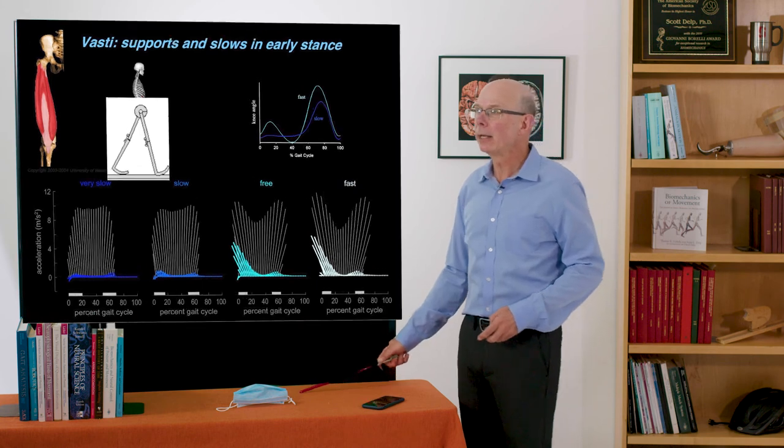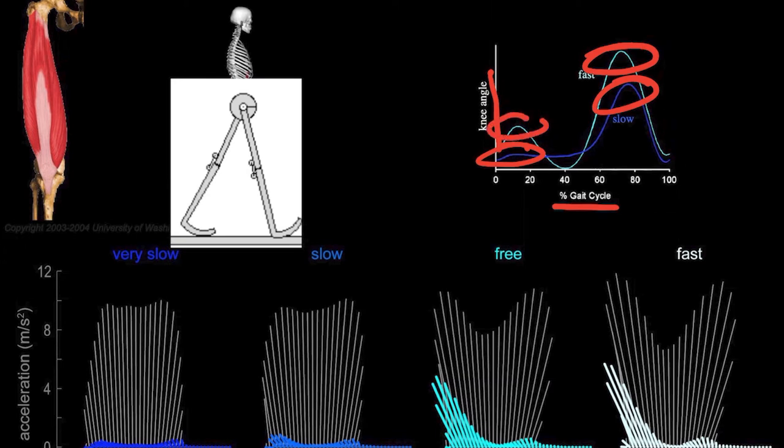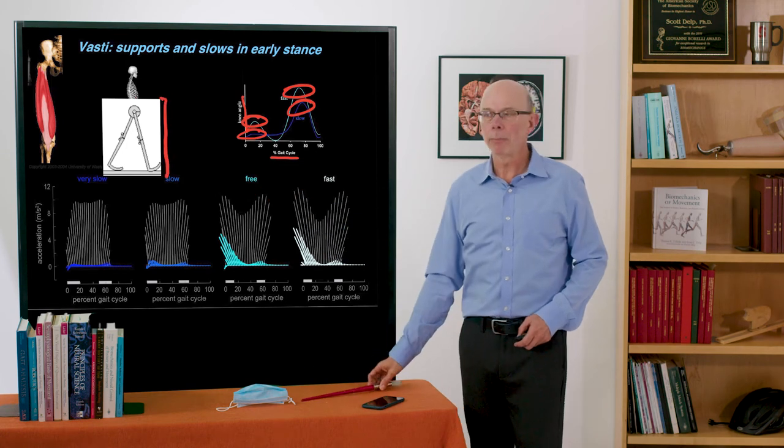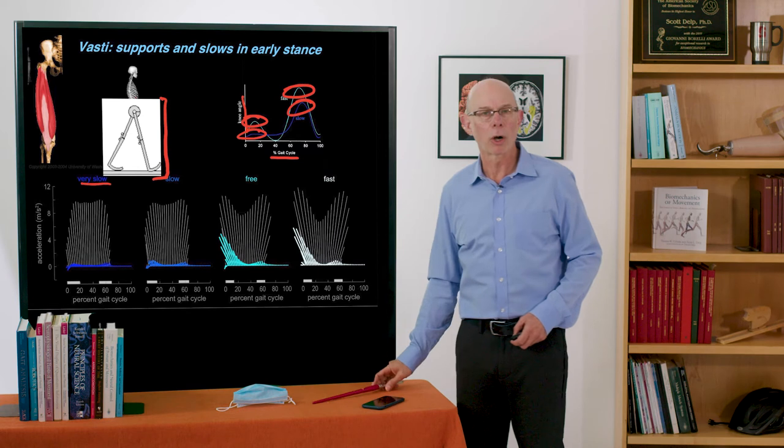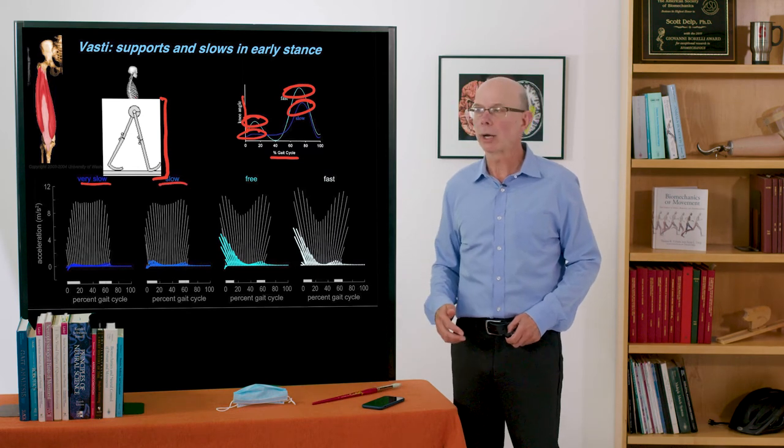You can see that here. The knee flexion angle versus gait cycle during slow walking and during fast walking. You see there's much greater flexion in fast walking and the muscles play a much more active role. So when I think of these passive dynamic walkers here I think of them not as free speed walking but as slow or very slow walking. They're really representing those slow speeds of walking more than they are typical walking.